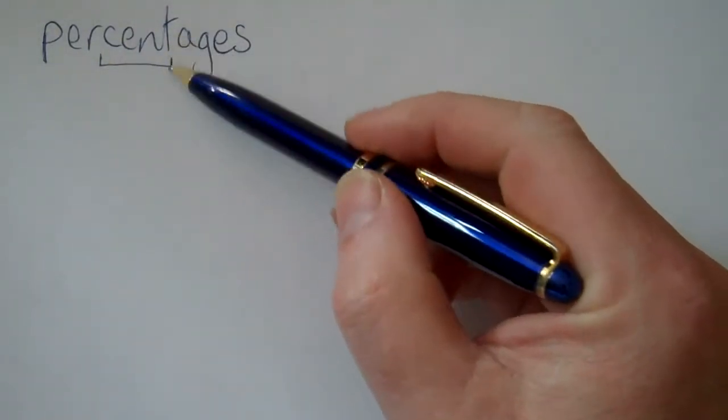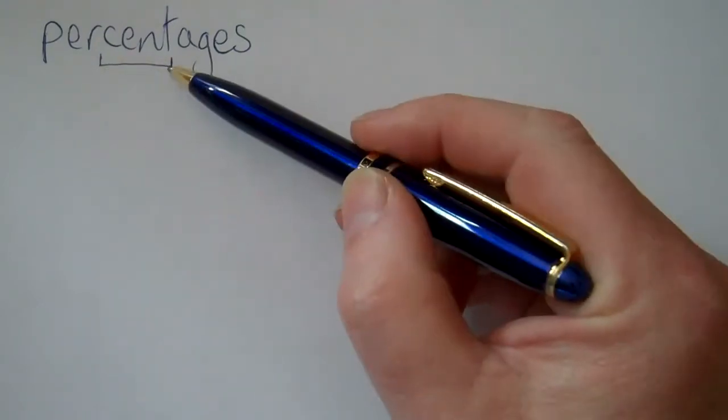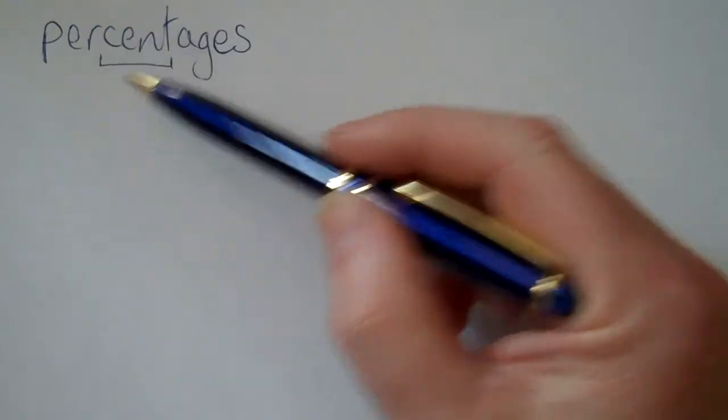Roman centurion in charge of a hundred soldiers, a century, a hundred years, a hundred cents in a euro or a dollar. So it's always got something to do with a hundred.